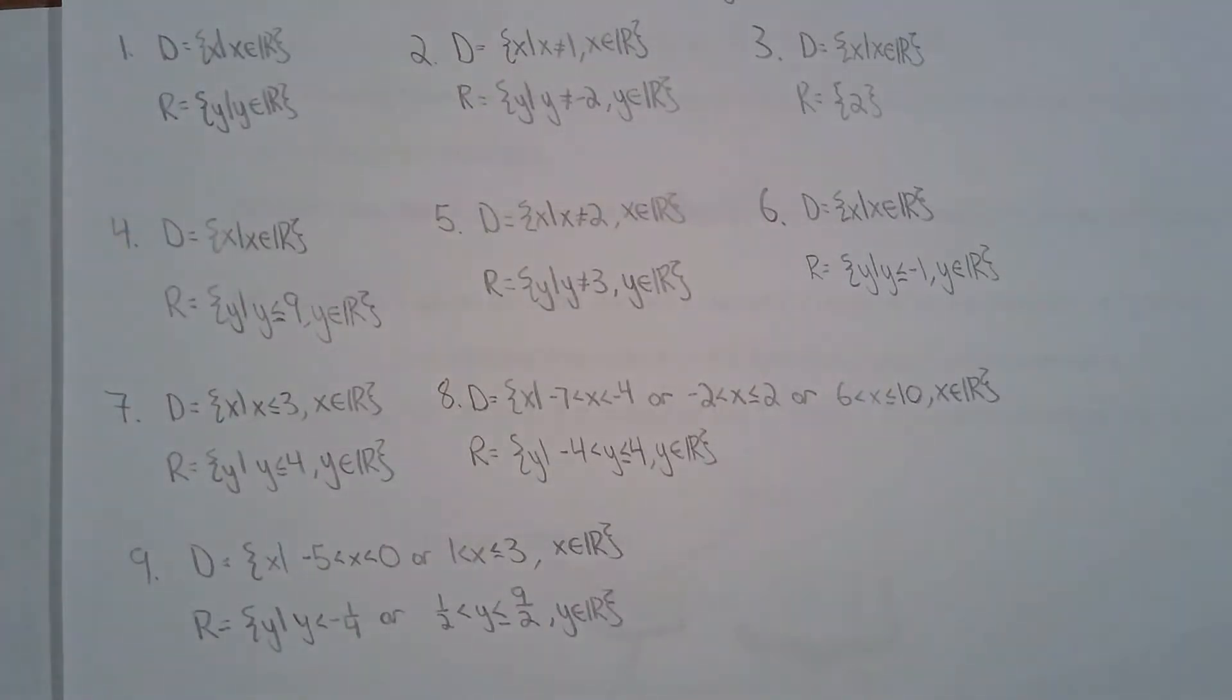For question five you have your asymptotes and you can see that X can be any real number except for two, and for the horizontal asymptote it's showing you that Y can be any real number except for three.